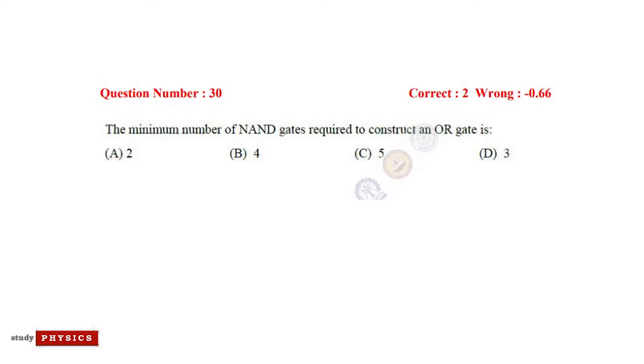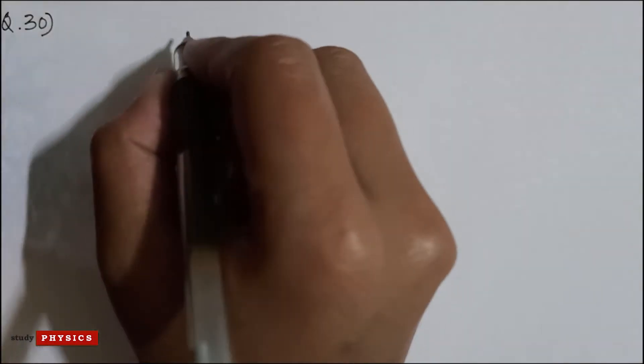Now question number 30: The minimum number of NAND gates required to construct an OR gate is. So, NAND to OR.